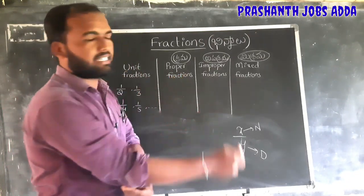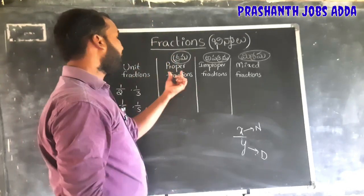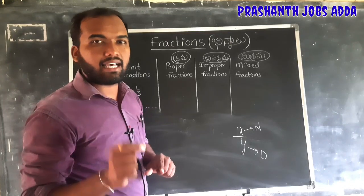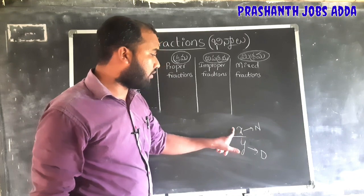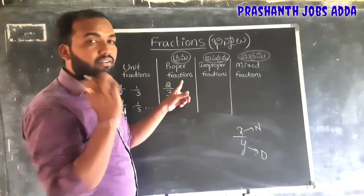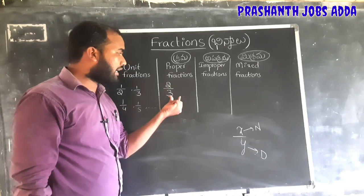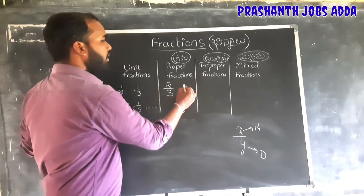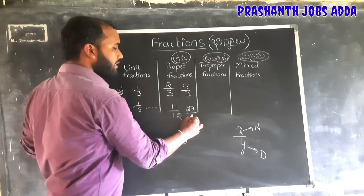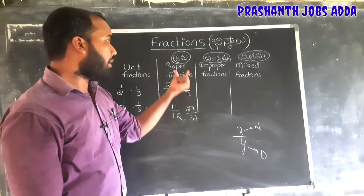Next, proper fractions — also called krama binnam. If the numerator is less than the denominator, it is called a proper fraction. For example: 2 by 3, 5 by 7, 11 by 12, 27 by 37 — these are proper fractions, where the numerator is smaller than the denominator.